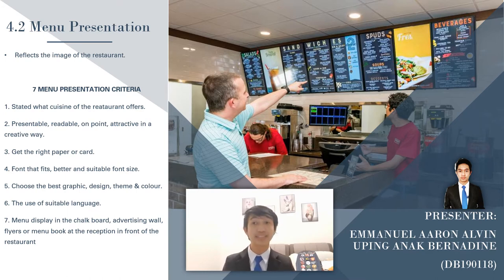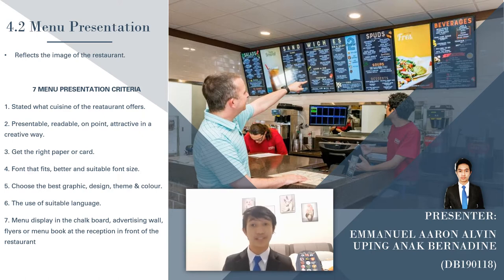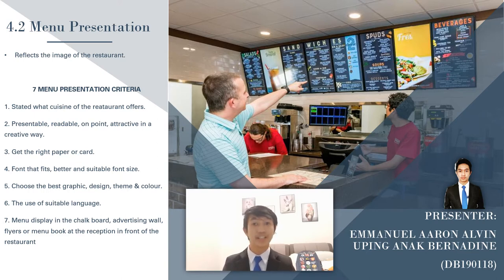Menu display needs to be taken care of so that the customer will notice and get information easily. Menu display can be a chalkboard, advertising wall, or a menu book. If the menu is printed in a menu book, the right paper or card should reflect the quality of the establishment. Find a font that fits — choose a suitable font size and style that can be read easily by the customer. Choose the best graphic design, theme, and color which is attractive to the customer's eye. The attractive design will assist in achieving the uniqueness of the particular food operation. The use of language is also important so that the customer will understand well, and it must be accurate and simple.